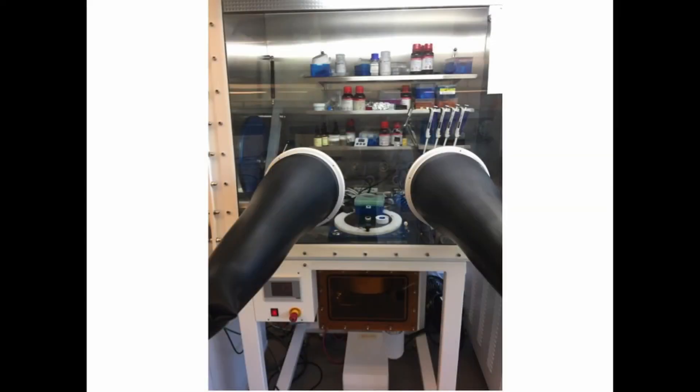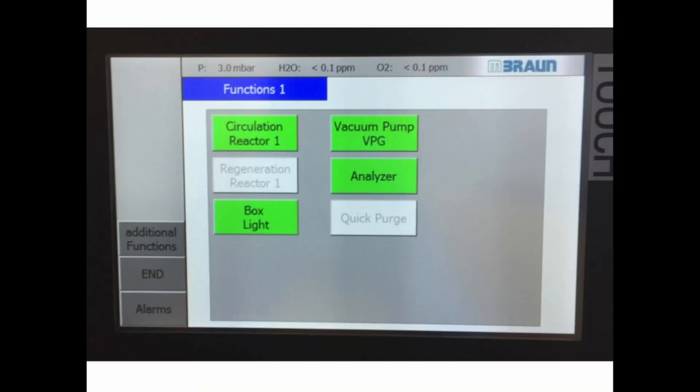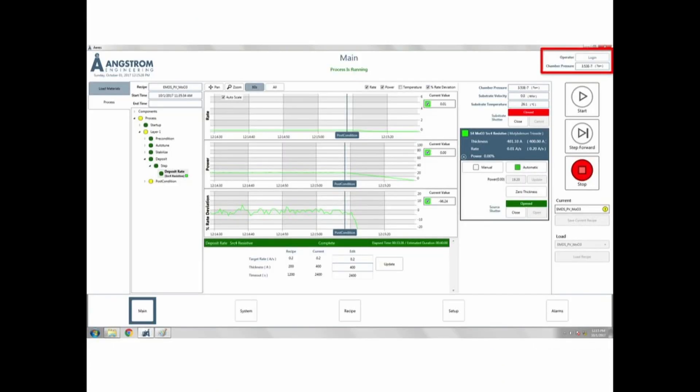This spin coater is located inside of a nitrogen glovebox. Before using the spin coater we must confirm the glovebox is ready to be used. First, let's confirm there is sufficient nitrogen pressure, the oxygen and water levels are below 0.1 ppm, and the thermal evaporator is under vacuum.